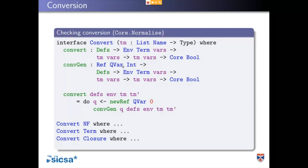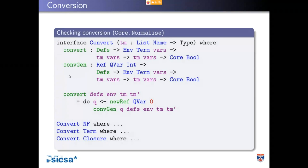We need a name supply, which is another reason for being in core. So we're going to implement conv gen, where gen means I can generate a free variable name when I need to — conversion with a name supply. That's implemented for values, terms and closures, with the details done in terms of values, NF.